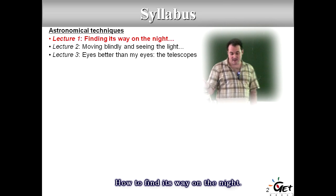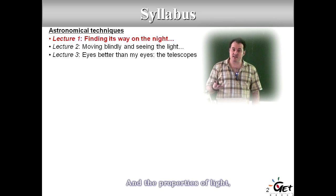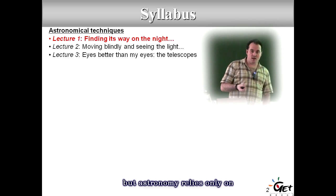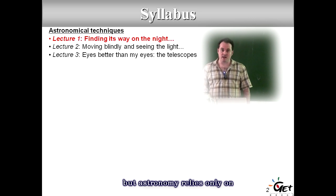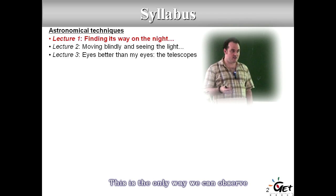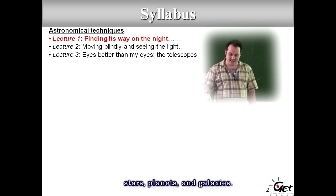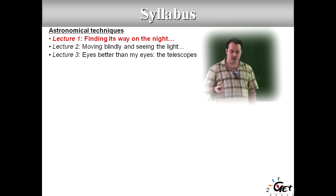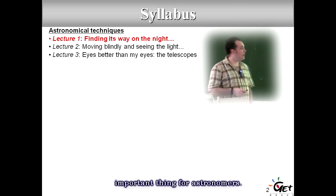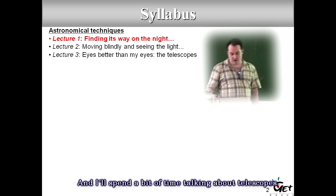How to find your way on the night sky, and the properties of light. Astronomy relies only on observation through light of very distant objects — this is the only way we can observe stars, planets, galaxies, and the universe. So the properties of light are extremely important for astronomers. I will also spend some time talking about telescopes.